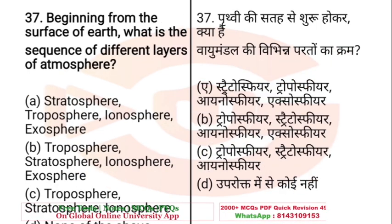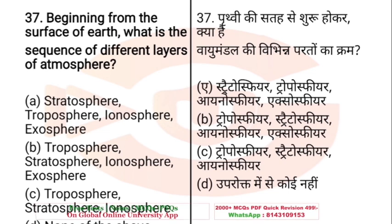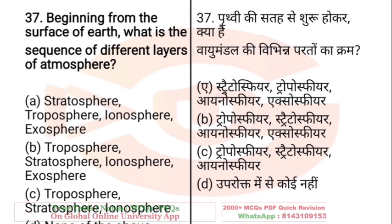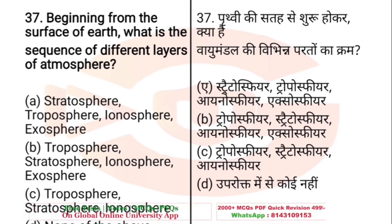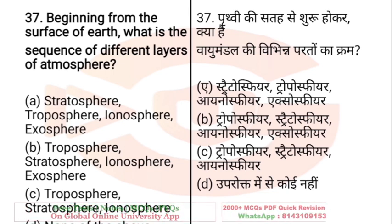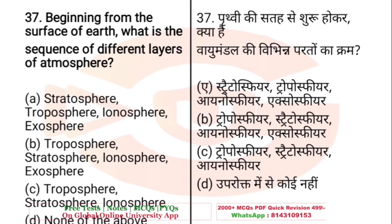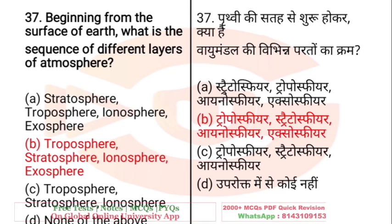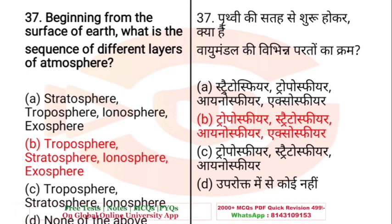Question: Beginning from the surface of Earth, what is the sequence of different layers of the atmosphere? A. Stratosphere, Troposphere, Ionosphere, Exosphere; B. Troposphere, Stratosphere, Ionosphere, Exosphere; C. Troposphere, Stratosphere, Ionosphere; D. None of the above. The right sequence is Troposphere, then Stratosphere, then Ionosphere (also called Mesosphere), and then Exosphere.